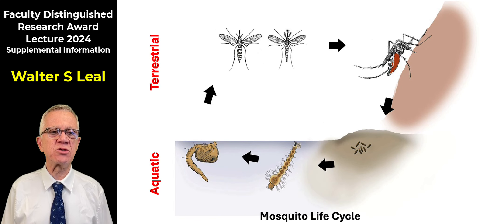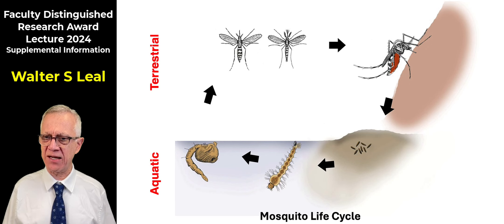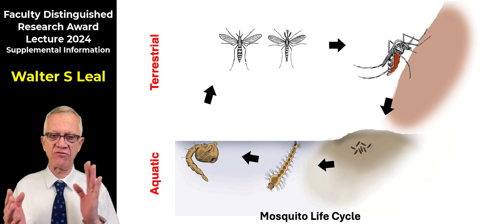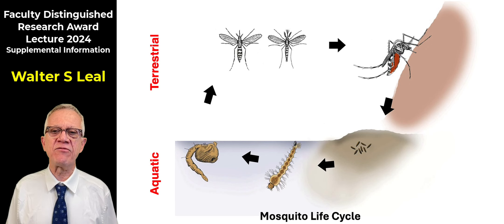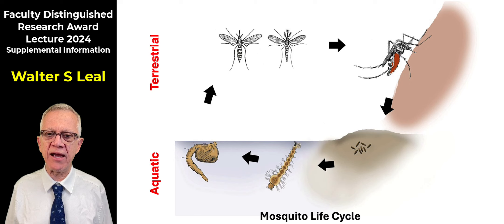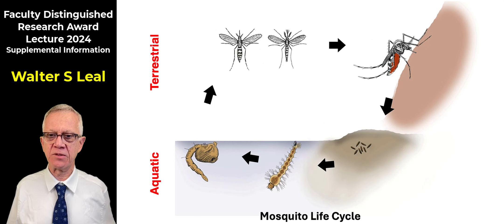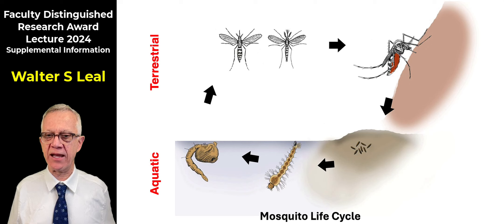Mosquitoes exist in two environments during the life cycle: the aquatic environment for the immature stage, and the terrestrial environment for the adults. The adults, males and females, encounter each other, they mate, and the female now needs a blood meal because she needs the nutrients for fertilizing the eggs. So she goes after a host and gets a blood meal, and then she finds a suitable place to lay eggs.